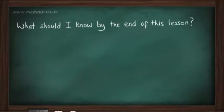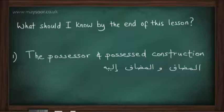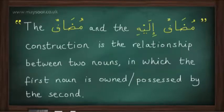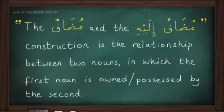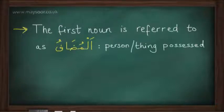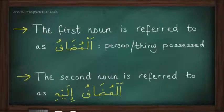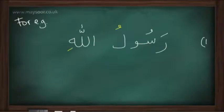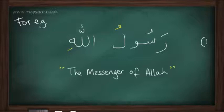In today's lesson we're going to be looking at the possessor and the possessed construction, referred to in Arabic as al-mudaf wal-mudaf ilayhi. This construction is the relationship between two nouns in which the first noun is owned or possessed by the second. The first noun is referred to as al-mudaf — this is the person or thing possessed. The second noun is referred to as al-mudaf ilayhi — this is the possessor.